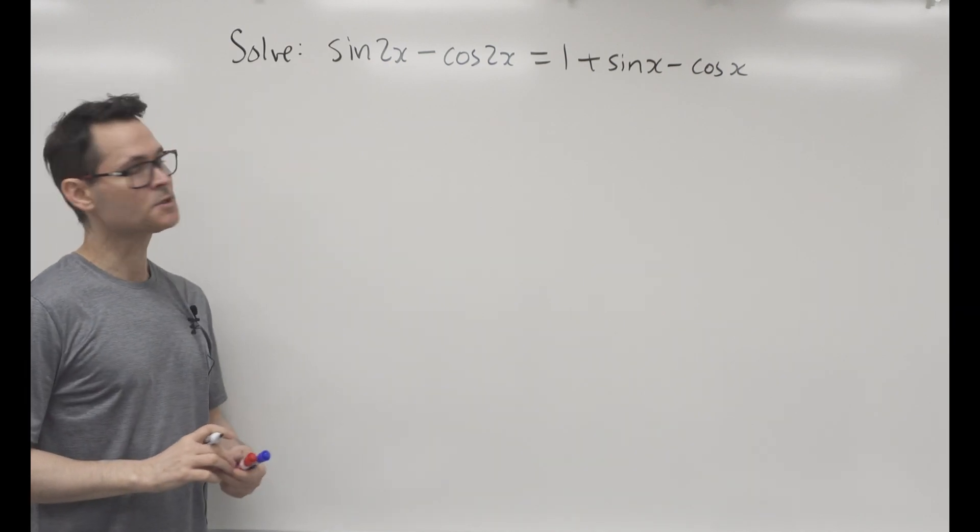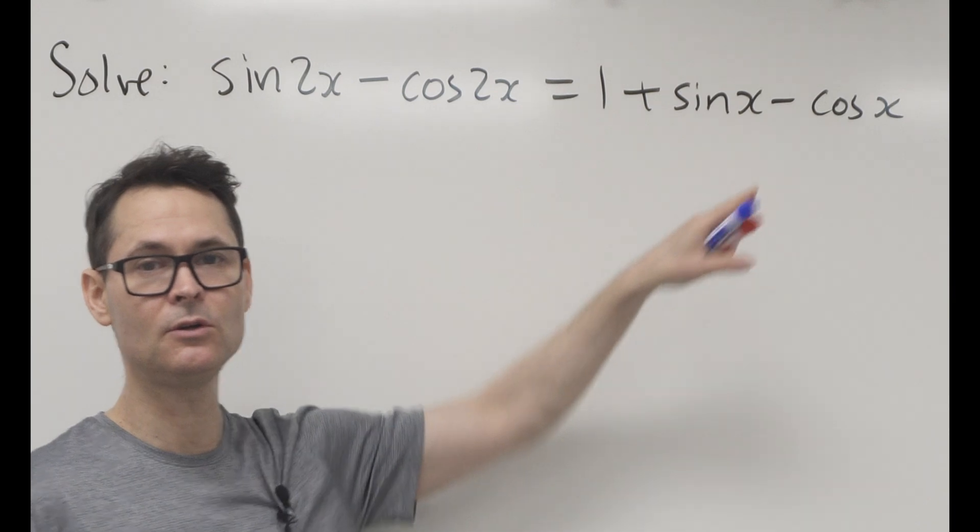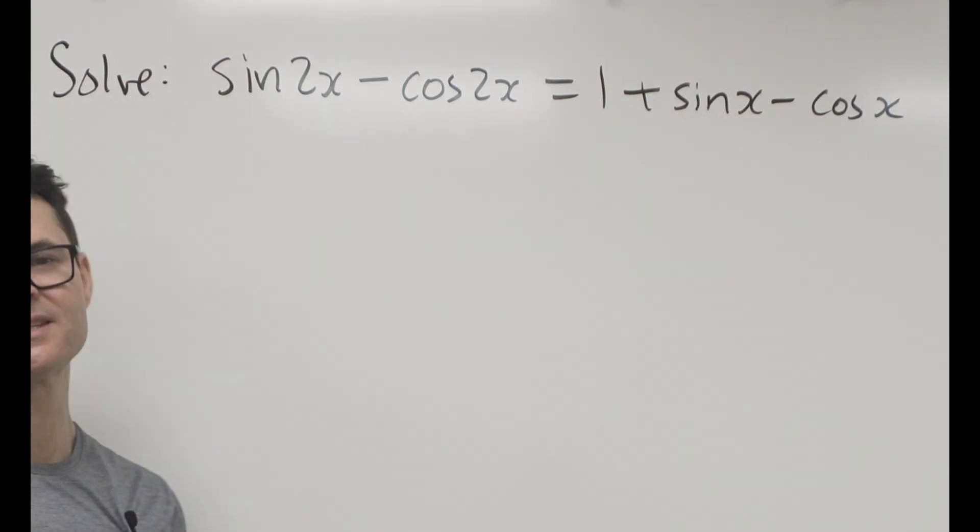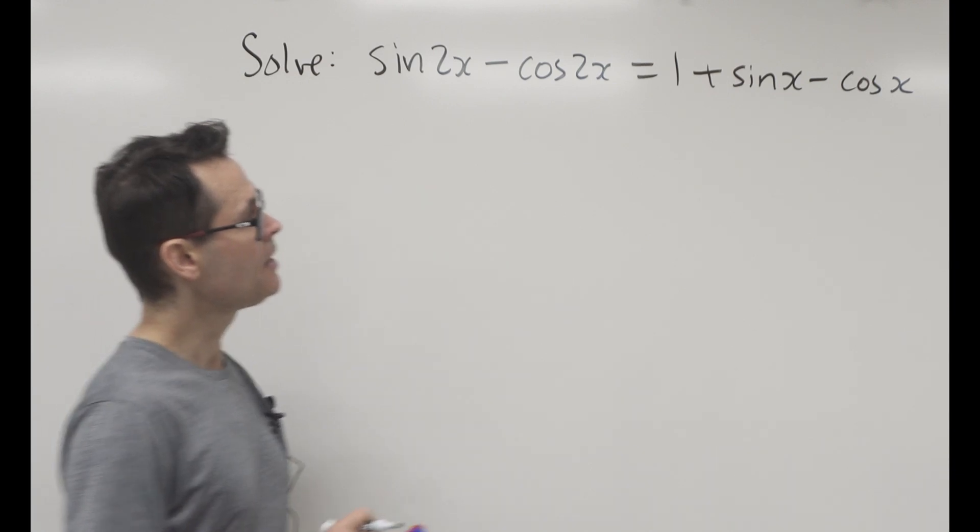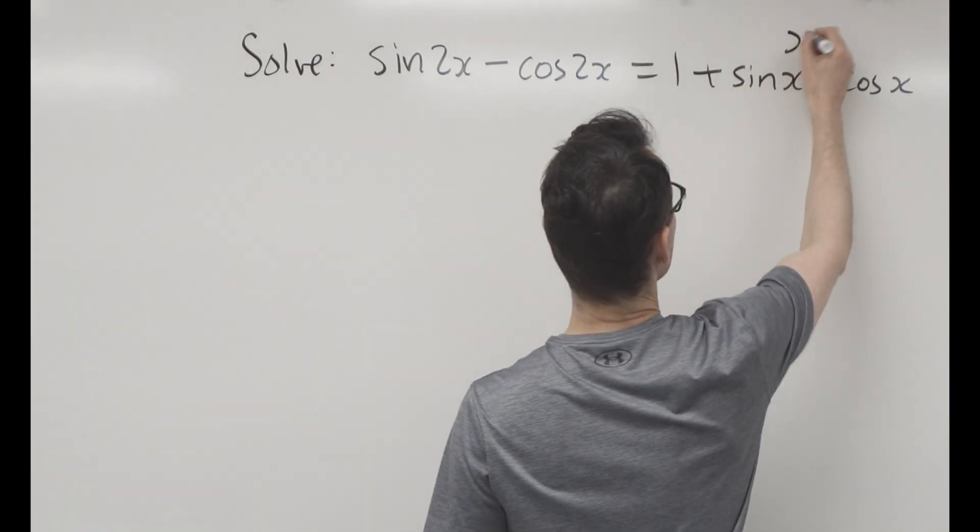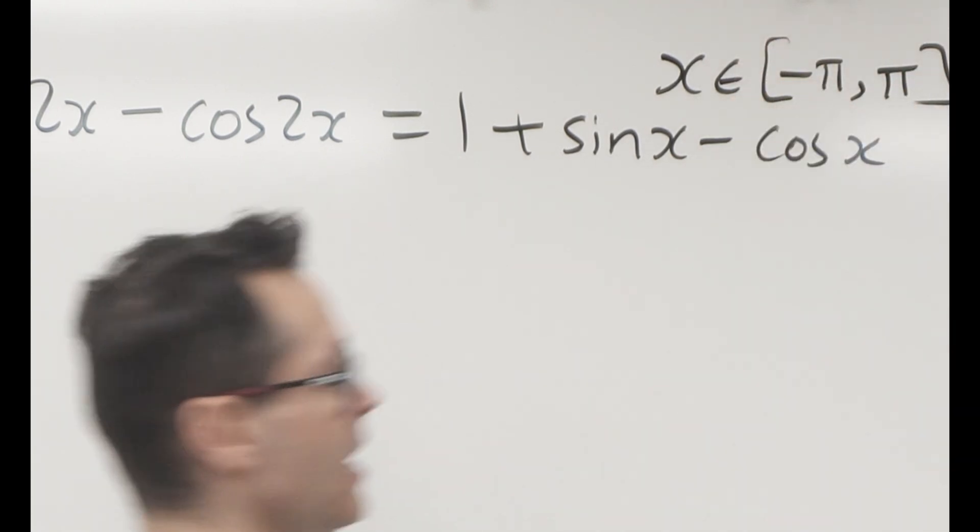So let's take a look at this one. It looks pretty ugly. We've got some double angles and we've got some single angles. This is designed to do within seven minutes, no calculator, so it's all algebraic, and I only want answers between negative pi and pi.